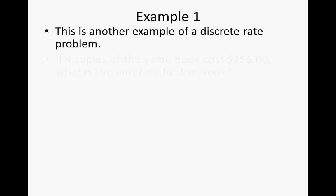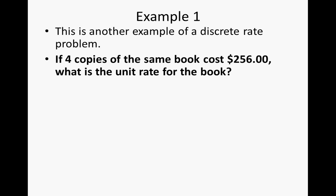All right, let's take a look at example one. This is another example of a discrete rate problem. If four copies of the same book cost $256, what is the unit rate for the book? Well, the unit rate is 256 divided by 4, or 266 over 4, which reduces to $64 per book.